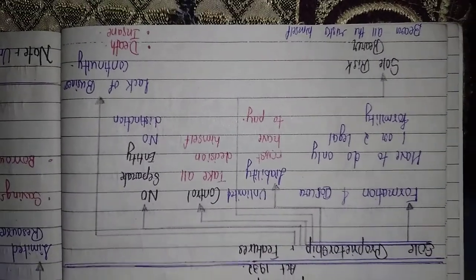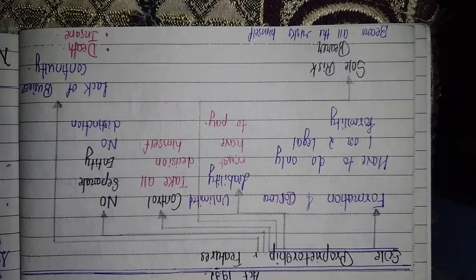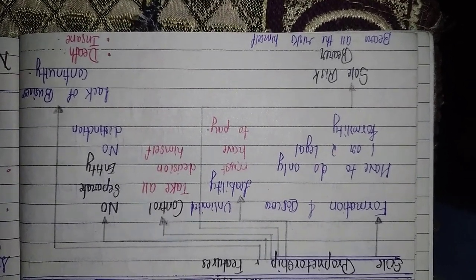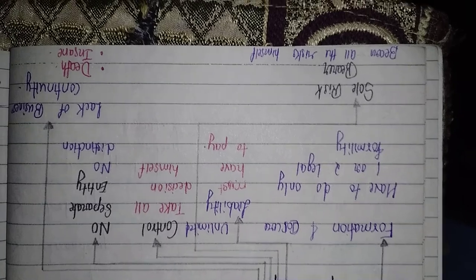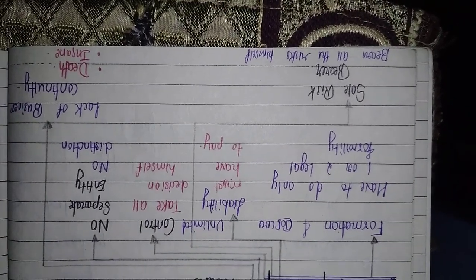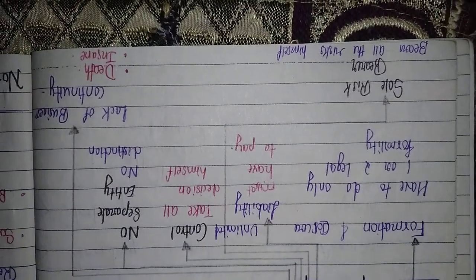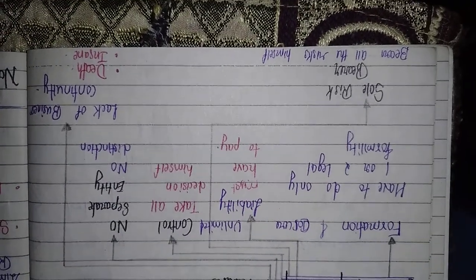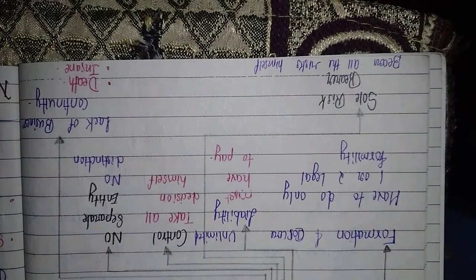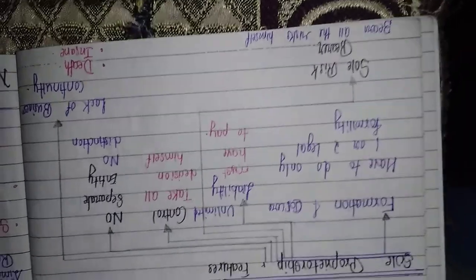The last two points are sole risk bearer, meaning you have to take all the risk of your business, and the last point is the lack of business continuity. Like if you have a death or you become disabled, then at this time your business will be very difficult and you have to stop it. Now, the advantages of sole proprietorship.